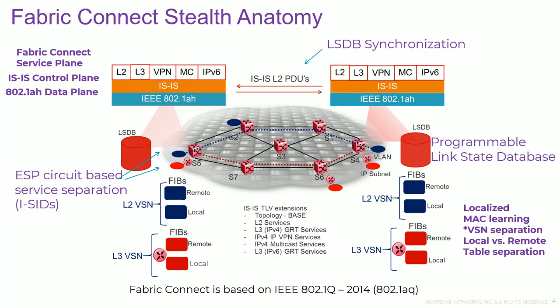Note also the ESP circuit-based service separation — ESP stands for Ethernet Switched Paths. Taking Ethernet Switched Paths and making them contiguous end-to-end across the network gives you something called an ISID, or Individual Service Identifier. These are the virtual service networks we're discussing. This provides a very dark networking environment with absolute total separation between services and MAC learning environments. This is a defined standard, as shown at the bottom of the slide.